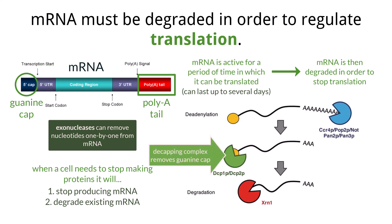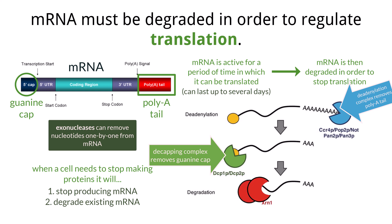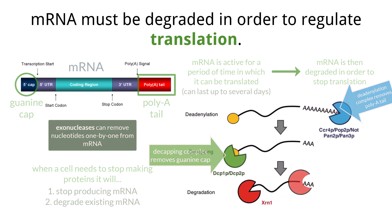The decapping complex, a group of enzymes, removes the cap, while the deadenylase complex, another group of enzymes, removes the adenine nucleotides from the tail. Once the cap and the tail are removed, exonucleases can break up the mRNA one nucleotide at a time. The nucleotides are then reused.